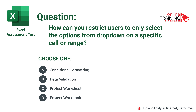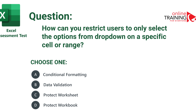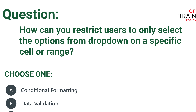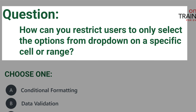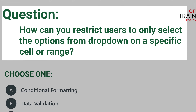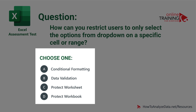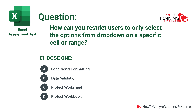Here's an Excel test question to help assess your knowledge of user data entry controls: how can you restrict users to only select options from a dropdown on a specific cell or range? The four choices are: conditional formatting, data validation, protect worksheet, and protect workbook. Which one do you think is right?